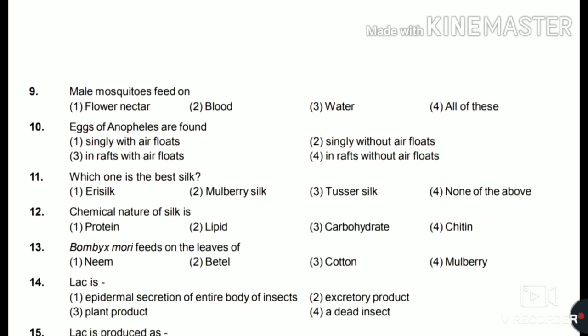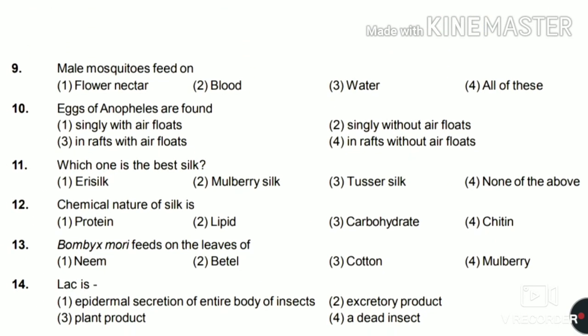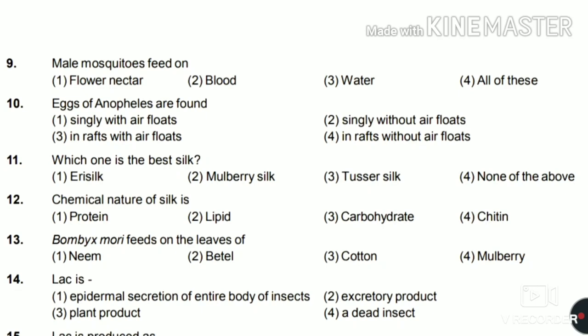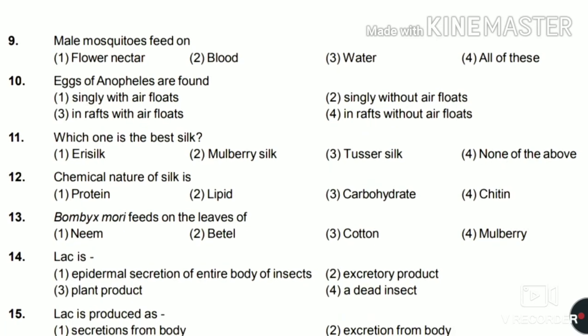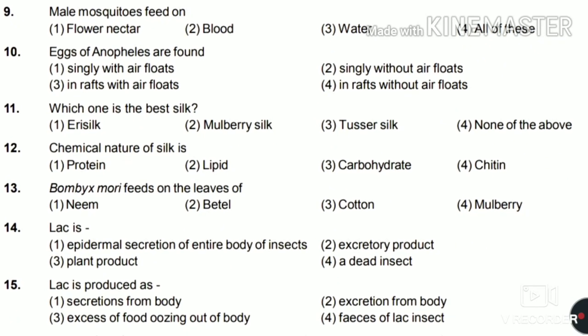Ninth: male mosquito feeds on flower nectar, blood, water, or all of these? The answer is flower nectar. Tenth: eggs of Anopheles are found singly with air floats, singly without air floats, in rafts with air floats, or in rafts without air floats? The answer is singly with air floats.